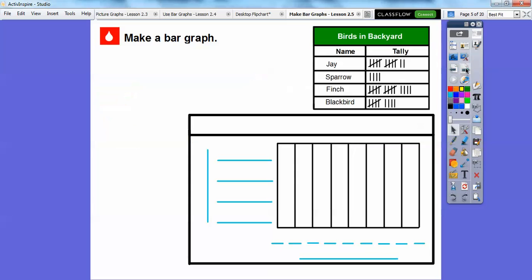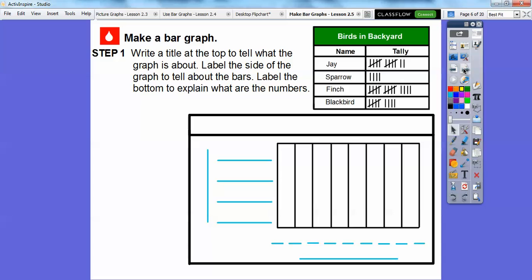Here's our horizontal bar graph. They're going to go across right here. We're going to build a bar graph with this box. The first step is to write a title at the top to tell what the graph is about. The graph is talking about the birds in Sandra's backyard, so the title is Bird Types in Sandra's Backyard.